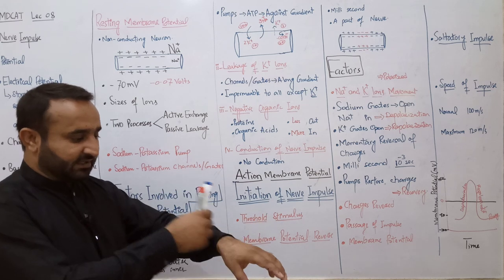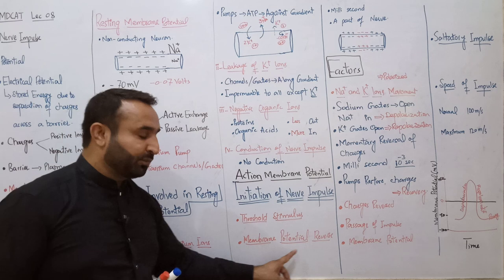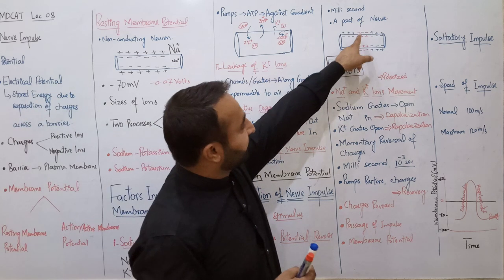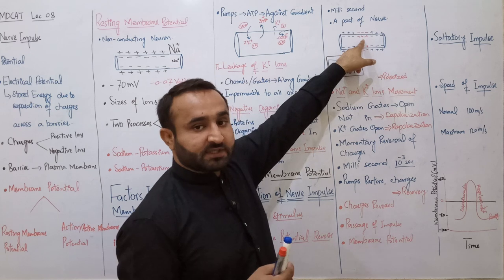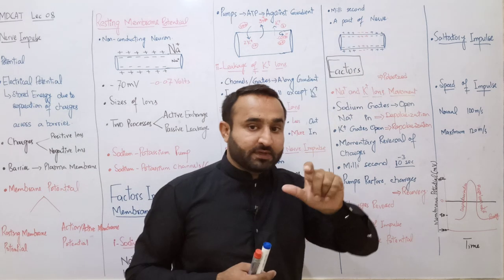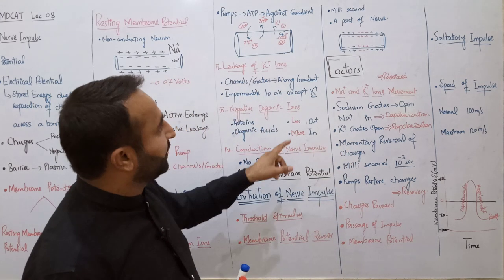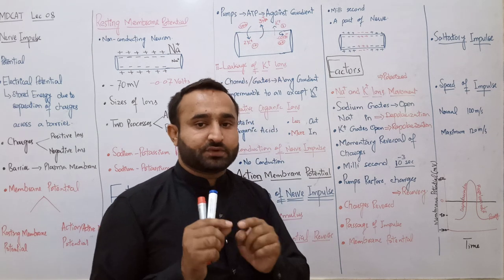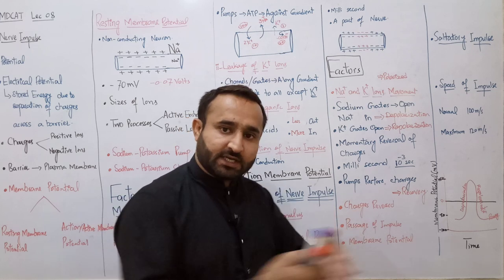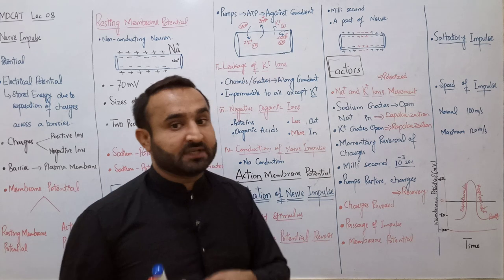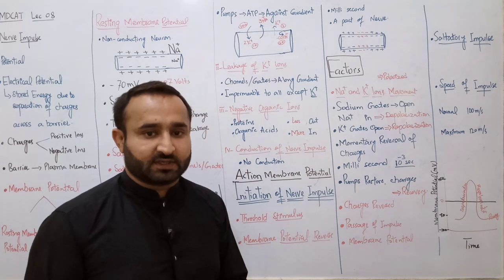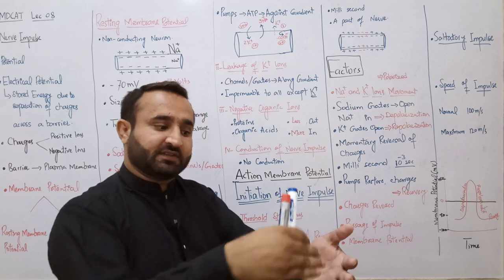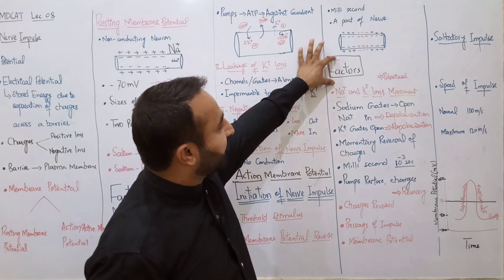جیسے آگ سے کچھ چیز ڈکرائی اور ہم نے ہاتھ پیچھے کھینچا - nerve impulse spinal cord تک کیسے گئی؟ Membrane potential reverse ہوا - پہلے باہر positive زیادہ تھا، اندر negative، اب reverse ہوا۔ تھوڑے سے area میں nerve impulse transmit ہو رہی ہے تو اندر positive زیادہ ہو گیا اور باہر negative۔ یہ بہت تھوڑے time کے لیے ہوتا ہے - milliseconds - اور rapidly electric current کی طرح nerve cell کے اندر سے nerve impulse گزرتی ہے۔